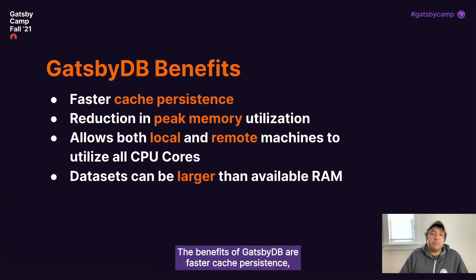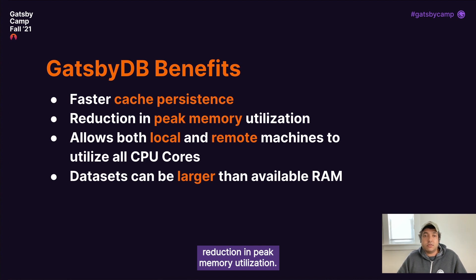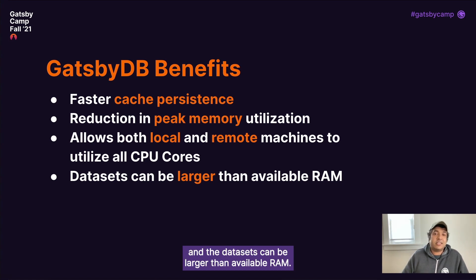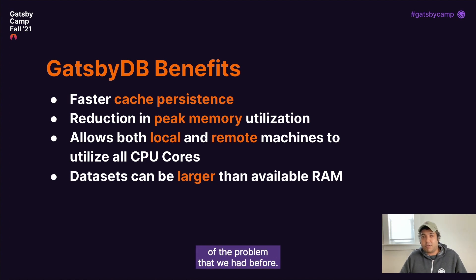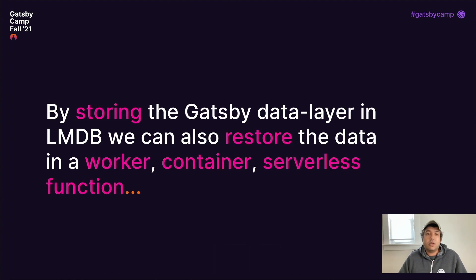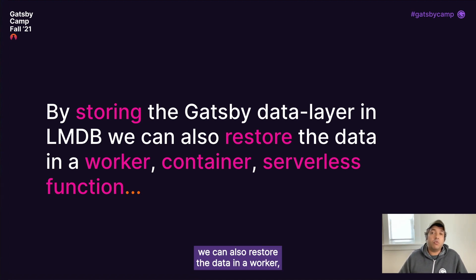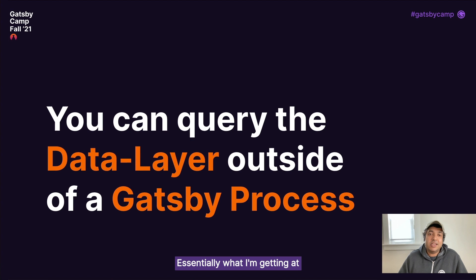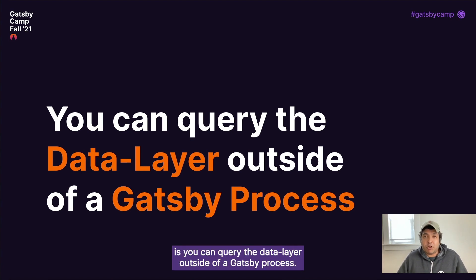The benefits of Gatsby DB are faster cache persistence, reduction in peak memory utilization, and it allows both local and remote machines to fully utilize all CPU cores. Datasets can be larger than available RAM — essentially the opposite of the problem we had before. By storing the Gatsby data layer in LMDB, we can also restore the data in a worker, a container, or a serverless function. You can query the data layer outside of a Gatsby process.